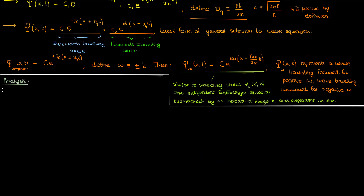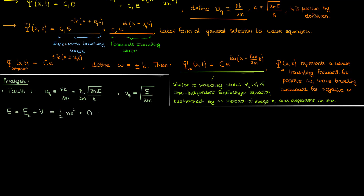Let's analyze this component solution, and you'll find there are a couple of faults. The first fault is seen when you look at the wave speed v sub q. Plugging in k and simplifying, the wave speed is the square root of E over 2m. However, since the total energy of the free particle is purely kinetic — E equals one-half mv squared — the classical particle speed is the square root of 2E over m, as opposed to the wave speed of the square root of E over 2m. You would expect these to be the same, but they're not, which is a bit of a paradox that I'll discuss more in the next video.